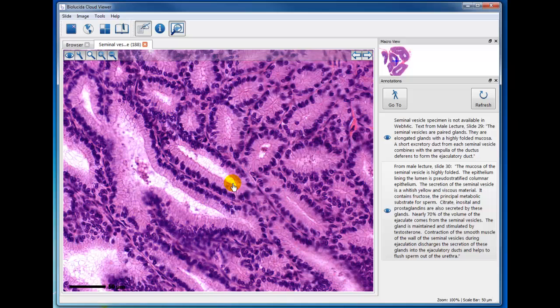But it also has patches that look almost like simple columnar. Whether you state in a test that it's simple columnar or pseudo-stratified columnar would be just fine. But you'll find areas where you'll see some nuclei underneath these, and that's where it gets its classification as pseudo-stratified.